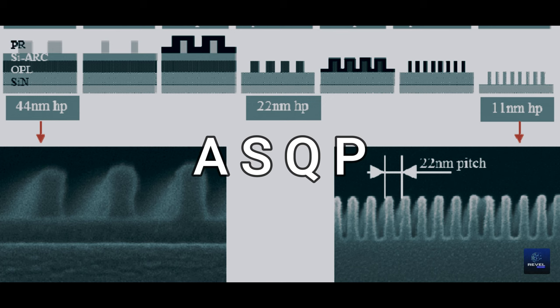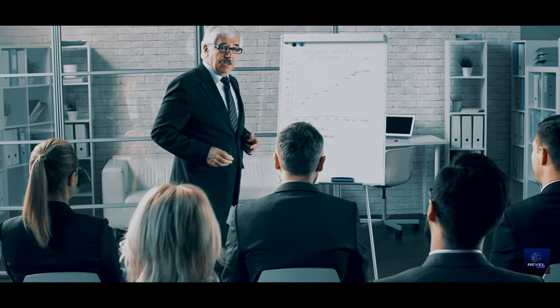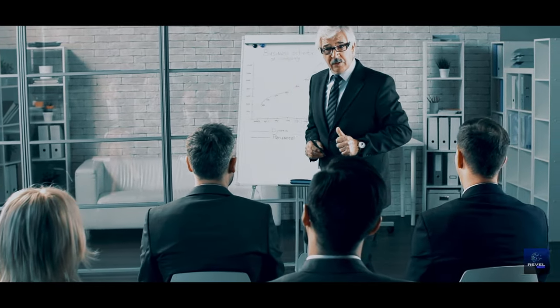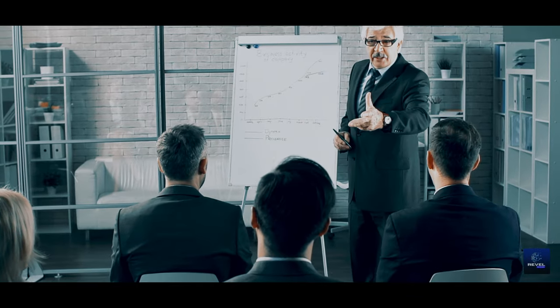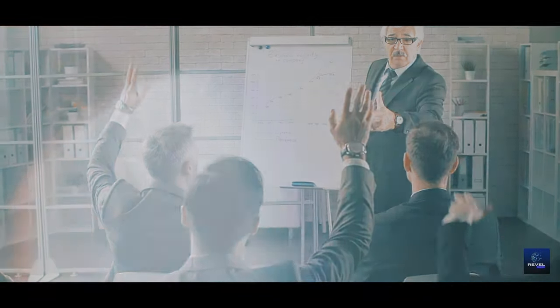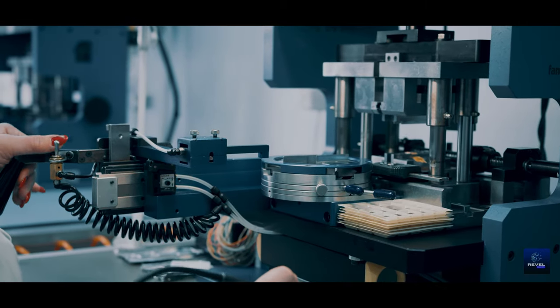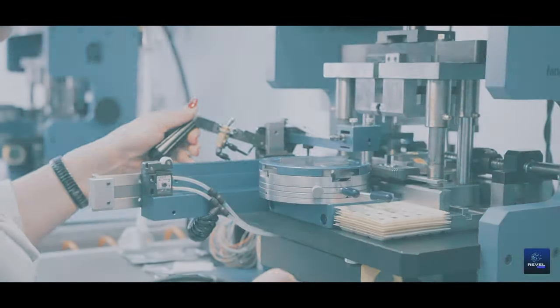SAQP, or self-aligned quadruple patterning, plays a significant role in semiconductor manufacturing. Through detailed explanations and visual aids, we illustrate how SAQP facilitates the production of sophisticated semiconductor chips with improved performance and efficiency. We also analyze recent advancements in SAQP research and their implications for China's semiconductor industry, shedding light on innovative strategies used to overcome technological barriers.